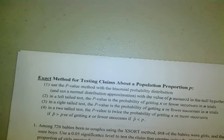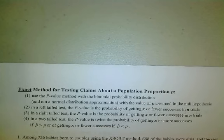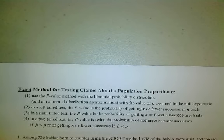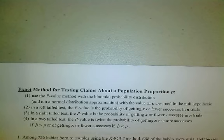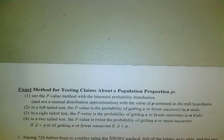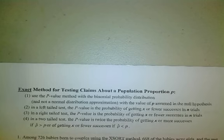If we want to use the exact method for testing claims about a population proportion, we use the p-value method with a binomial probability distribution and not the normal distribution. The p is assumed in the null hypothesis. In a left-tailed test, the p-value is the probability of getting x or fewer successes in n trials. In a right-tailed test, it's the probability of getting x or more successes. In a two-tailed test, it's twice the probability - depending on whether p-hat is greater than or less than p.